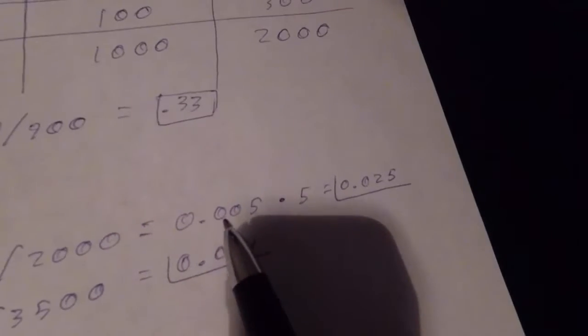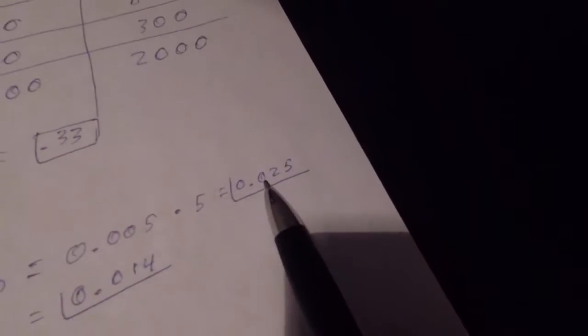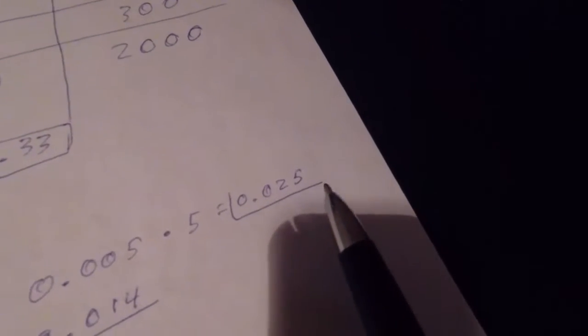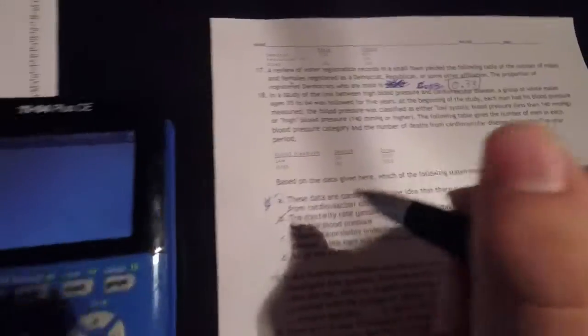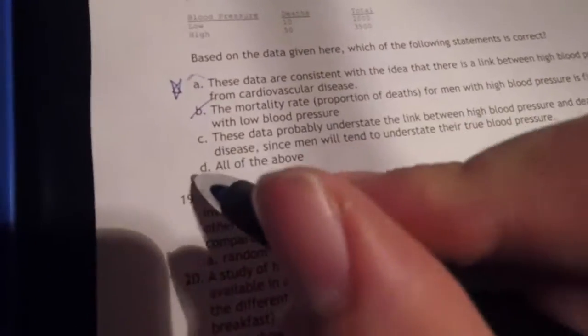I multiplied 0.005 by 5 to get 0.025, which is not equal to this. So B is effectively wrong. That eliminates all of the above as well.